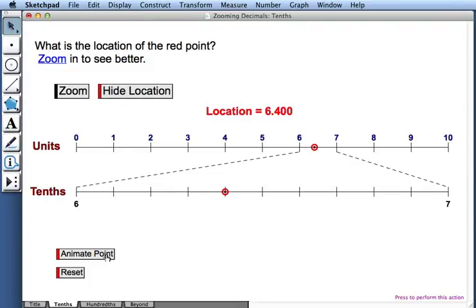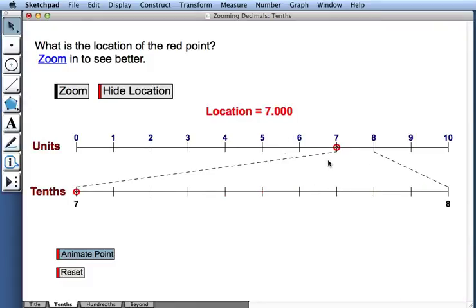I can press animate point. As I do, the point moves along both number lines, always in the same location on both lines. And that's moving by tenths.